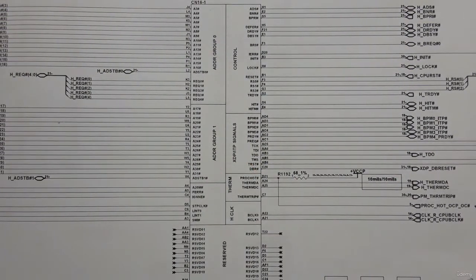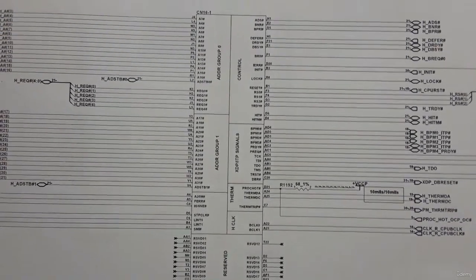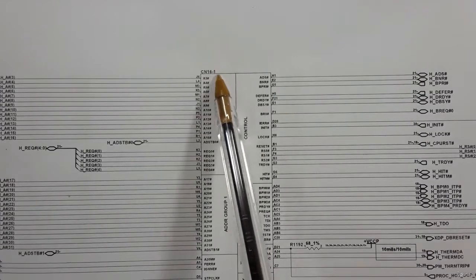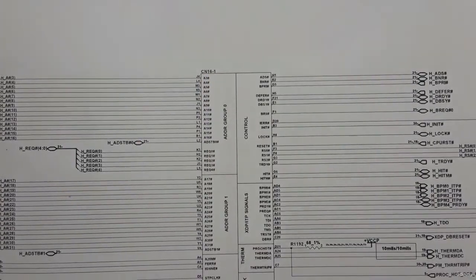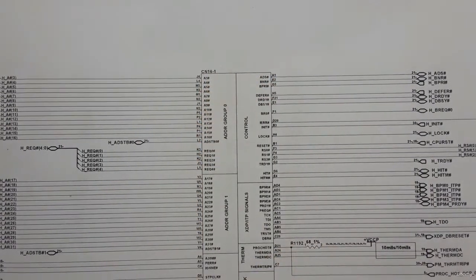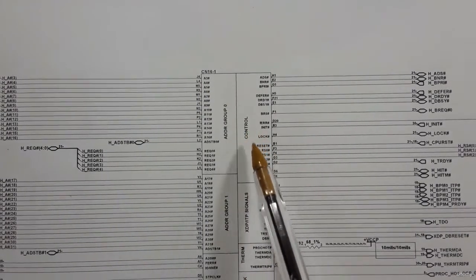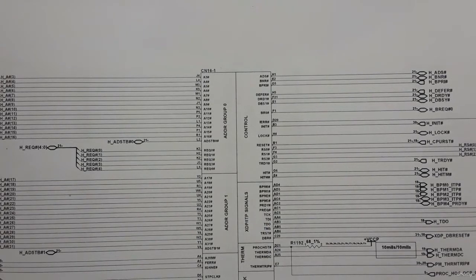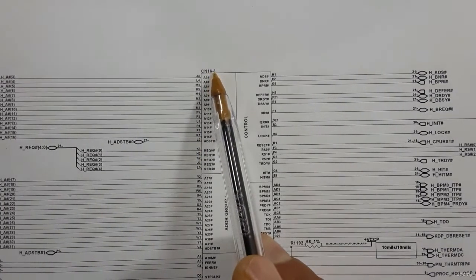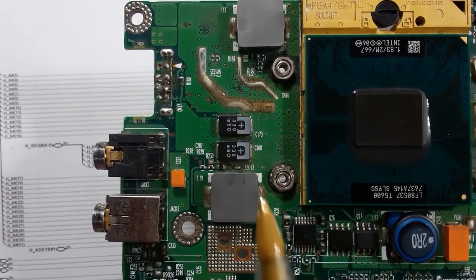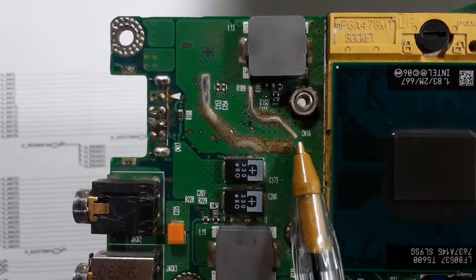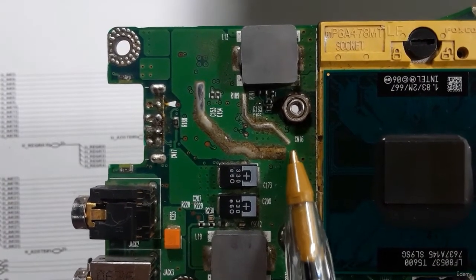For the processor, it contains many parts — each part is a controller designed to do specific operations. On the motherboard, the reference or name of the socket is CN16-1, where 'CN' means connector and '1' means this is the first part. There are many parts for the processor, as we've seen in the block diagram — the processor exists across five pages. This is part one, and now I'll show you the processor in the motherboard.